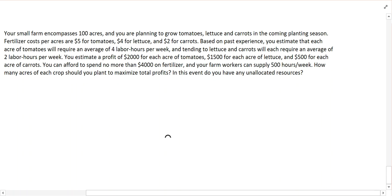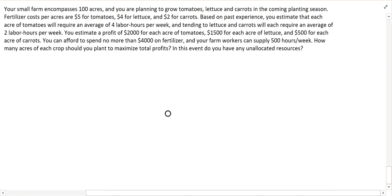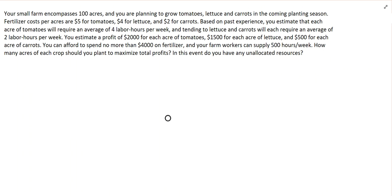All right, here we're looking at a linear programming problem. It says your small farm encompasses 100 acres, and you're planning to grow tomatoes, lettuce, and carrots in the upcoming planting season. Fertilizer costs per acre are $5 for tomatoes, $4 for lettuce, $2 for carrots.